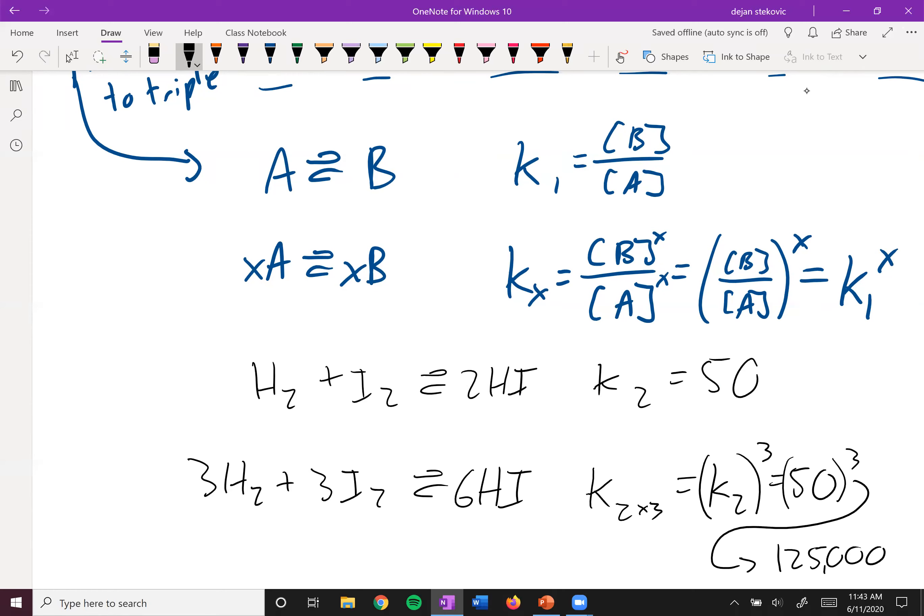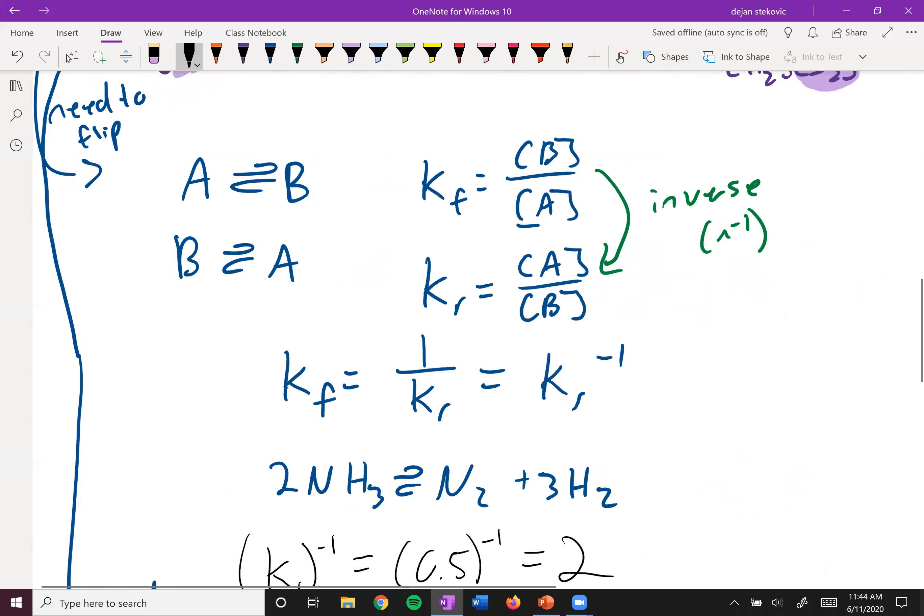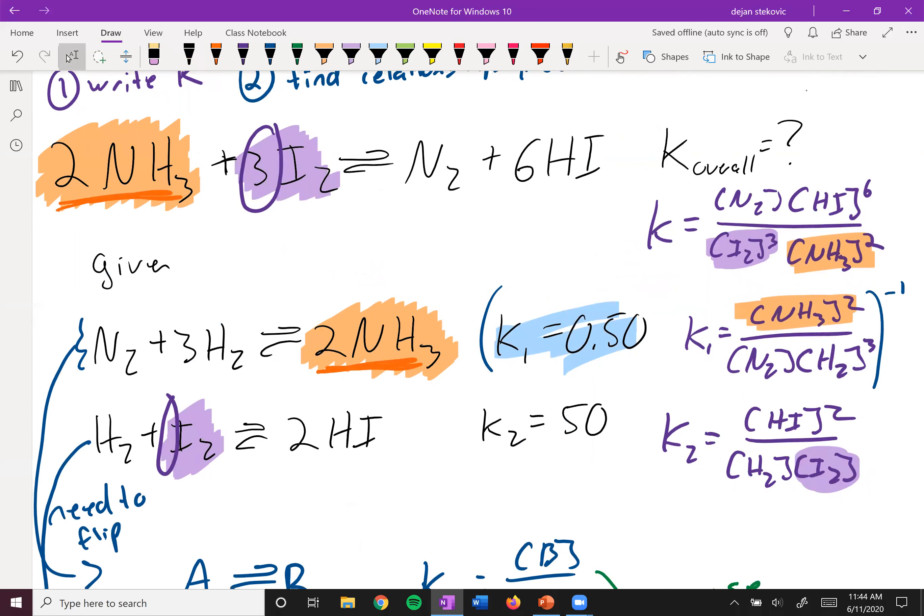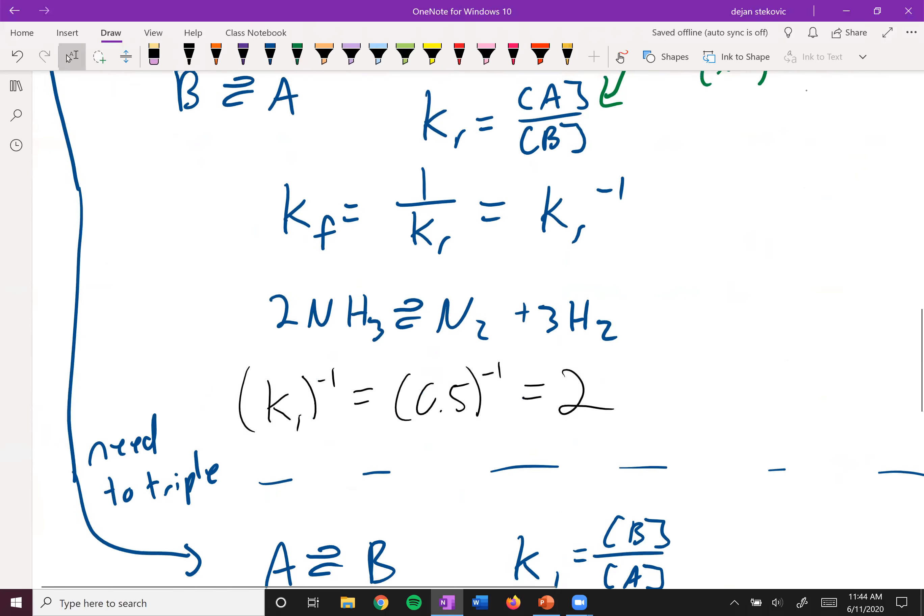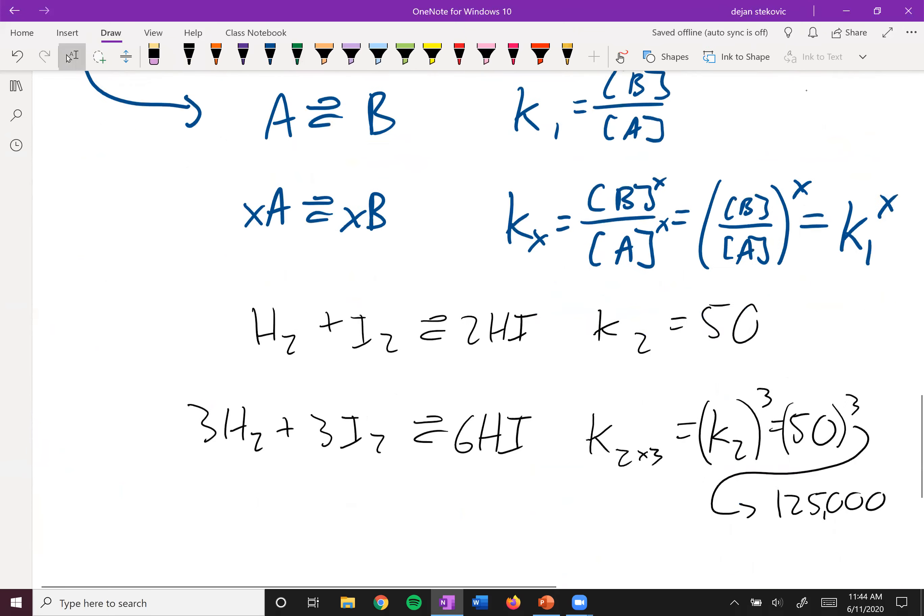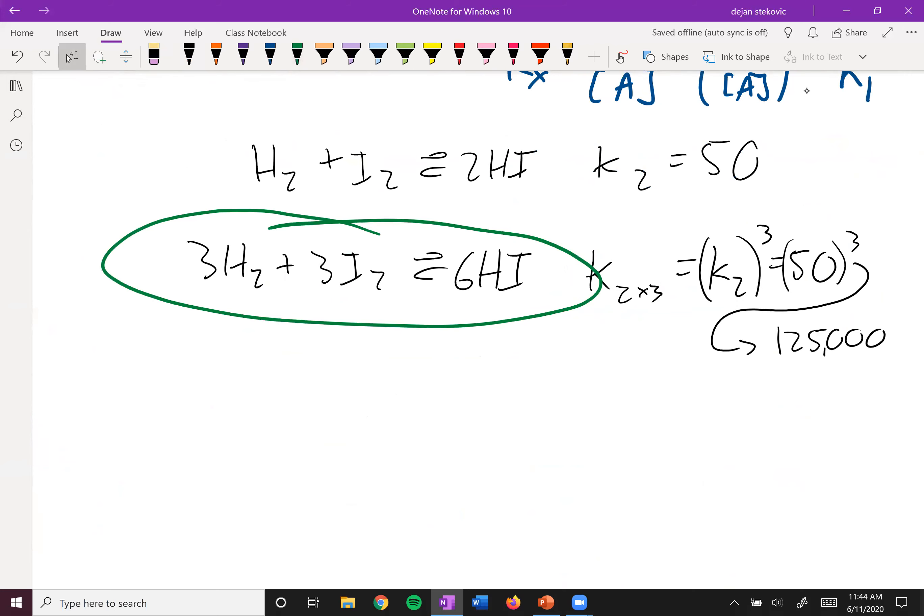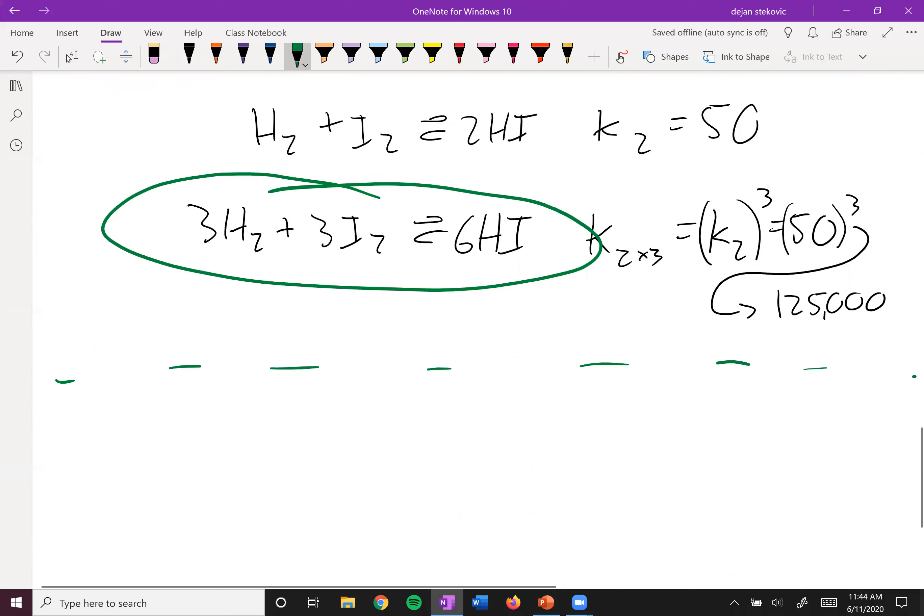So when you flip an equation here, you take the inverse. When you change the coefficient, you need to raise it to that power of whatever you did to raise it to that coefficient. And so you can get clues from your overall equations. The next step is that we need to sum our two manipulated equations. So we have this manipulated equation and this manipulated equation, and we need to sum these two and ensure that it is equal to what we want it to be equal to.